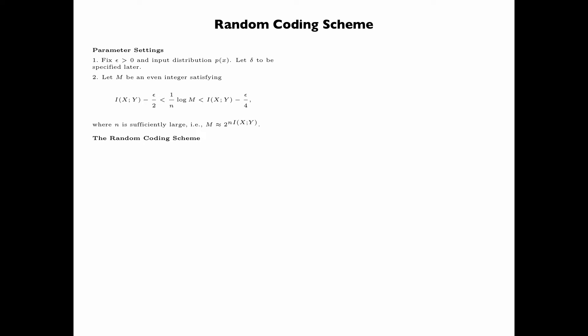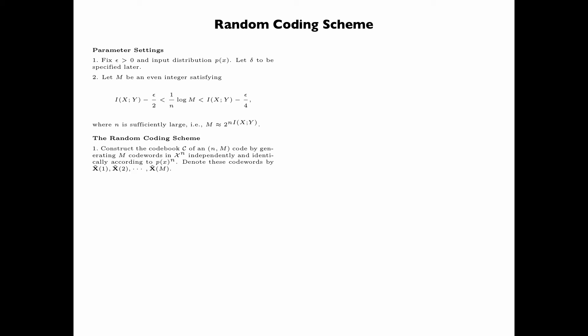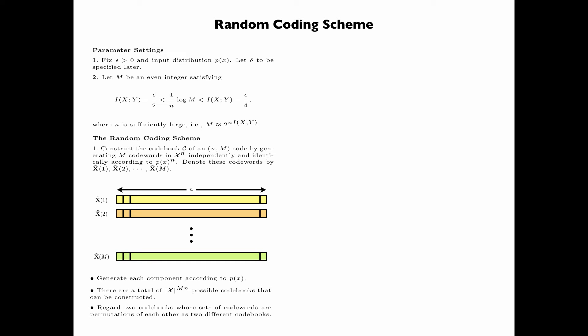We now describe the random coding scheme. First, construct the codebook C of an (n, M) code by generating M codewords of length n with alphabet X independently and identically according to P(X)^n. Denote these codewords by X^(1), X^(2), all the way to X^(M). Each component is generated IID according to P(X). There are a total of |X| to the power M times n possible codebooks, where M times n is the total number of components across all codewords, and two codebooks whose sets of codewords are permutations of each other are regarded as different codebooks.